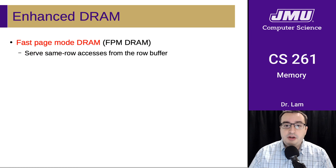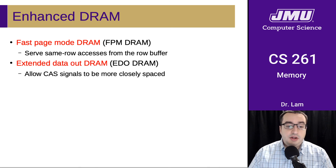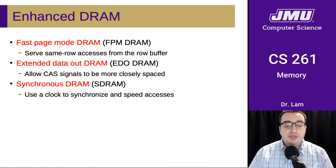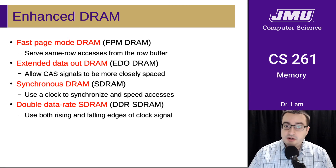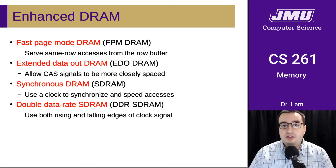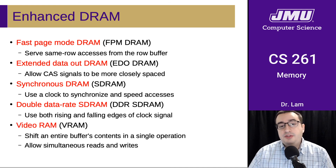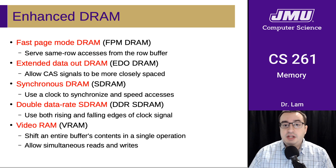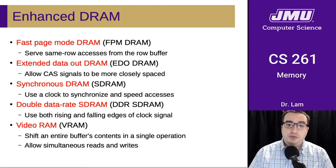There are several enhancements to DRAM developed over the years. Fast page mode DRAM serves same-row accesses from the same row buffer. Extended data out DRAM allows signals to be more closely spaced, doing more of them in the same amount of time. Synchronous DRAM uses a clock to synchronize and speed up accesses. Double data rate SDRAM, or DDR RAM — familiar to those who build computers — uses both the rising and falling edges of the clock signal for faster memory reads. Finally, video RAM, or VRAM, is built specifically for graphics, supports quickly shifting an entire buffer's contents in a single operation, and allows simultaneous reads and writes.